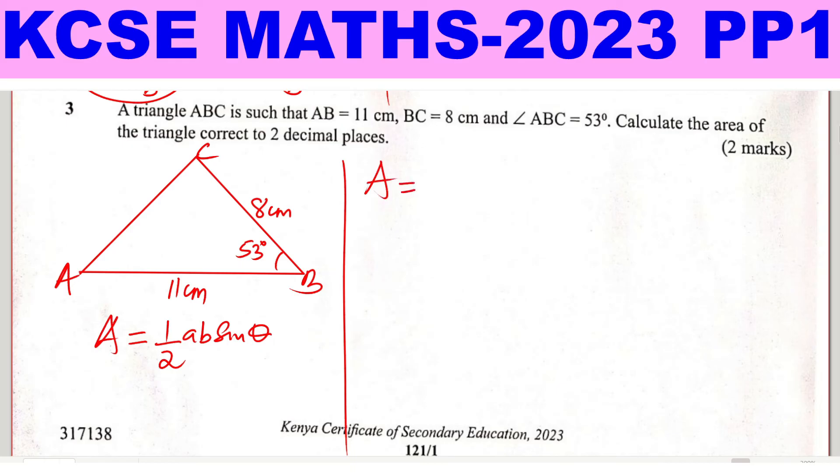So area equals half times A, we let A to be 8 and B to be 11, then sine of the angle which is 53. So we'll just use a calculator here.